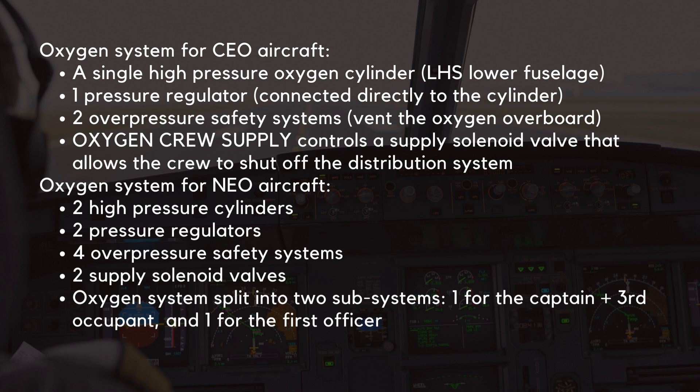The oxygen crew supply push button controls a supply solenoid valve that allows the crew to shut off the distribution system. On NEO aircraft, there is twice the amount of oxygen equipment: two high-pressure cylinders, two pressure regulators, four overpressure safety systems, and two supply solenoid valves.